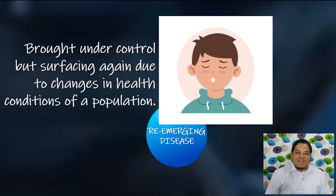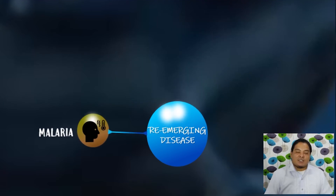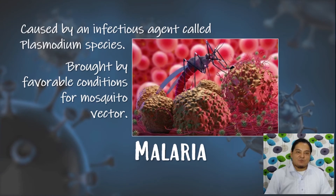Here are some examples of re-emerging diseases. 1. Malaria — this is caused by an infectious agent called Plasmodium species, a protozoan. This may be brought about by favorable conditions for the mosquito vector.